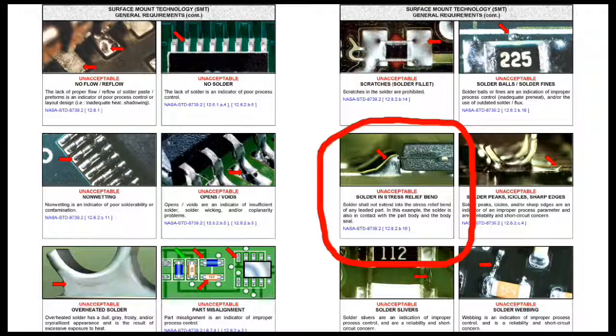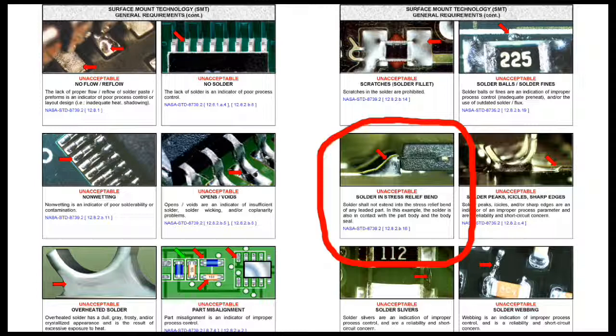When excess solder touches the component body, the component to lead connection cannot expand or contract with changing temperature. Remove the excess solder using solder wick. Reflow with flux and solder if necessary to make a smooth, concave, fully wetted joint.